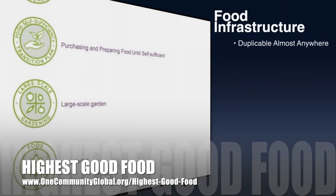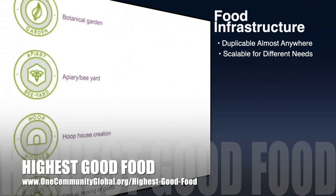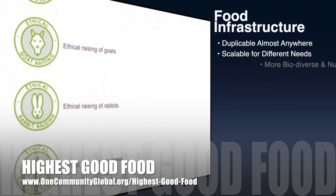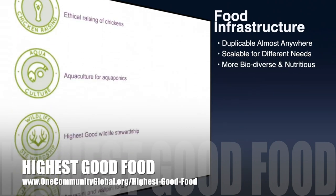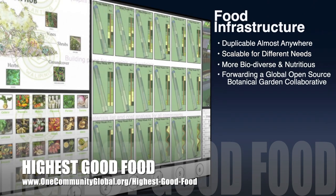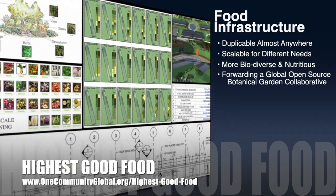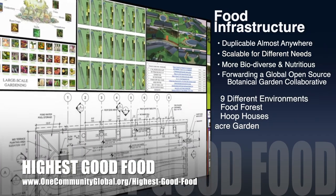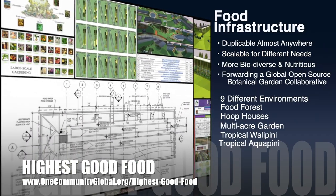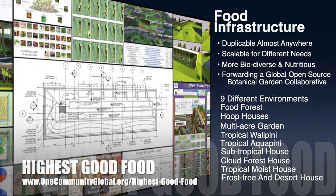One Community's approach to highest good food is duplicable almost anywhere, scalable for different needs, more biodiverse and nutritious, part of forwarding a global open source botanical garden collaborative, and includes nine different free shared and duplicable growing environments.